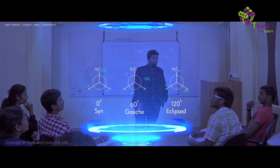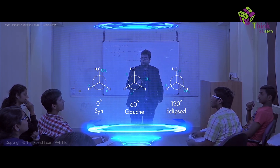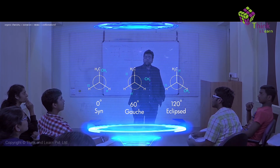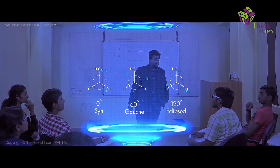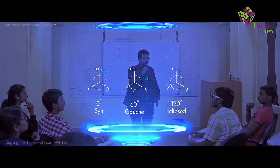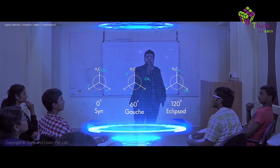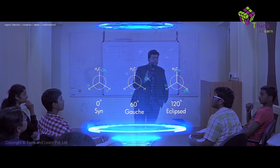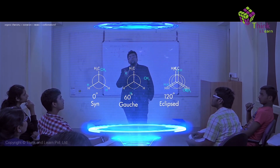Now if I further move it by 60 degrees, the dihedral angle becomes 120 degrees. At this point it would be called eclipsed, but this eclipsed is different from the syn conformation, because here CH3 is eclipsing a hydrogen — not CH3 and CH3. So this is also called eclipsed.